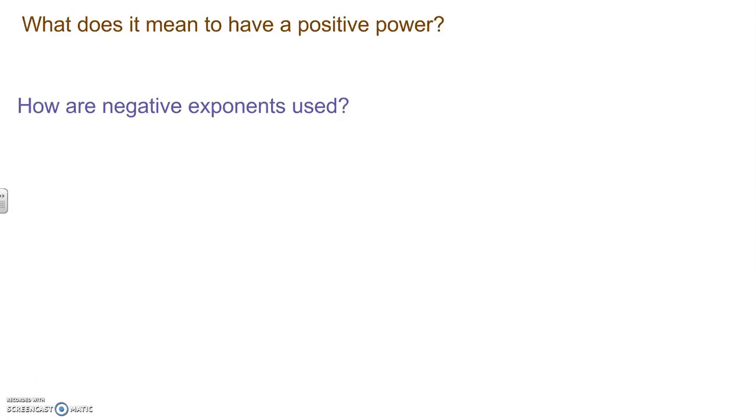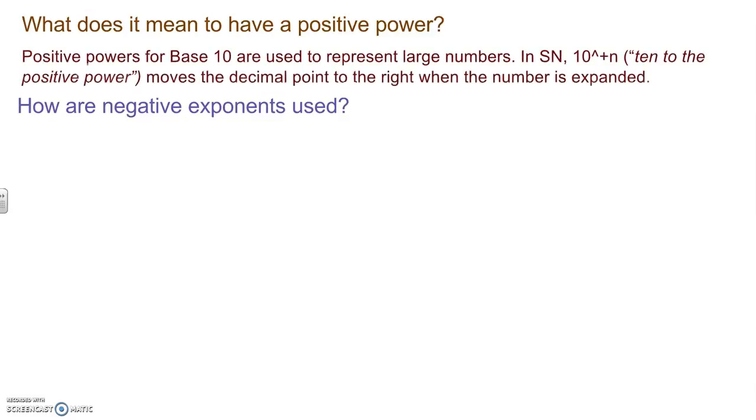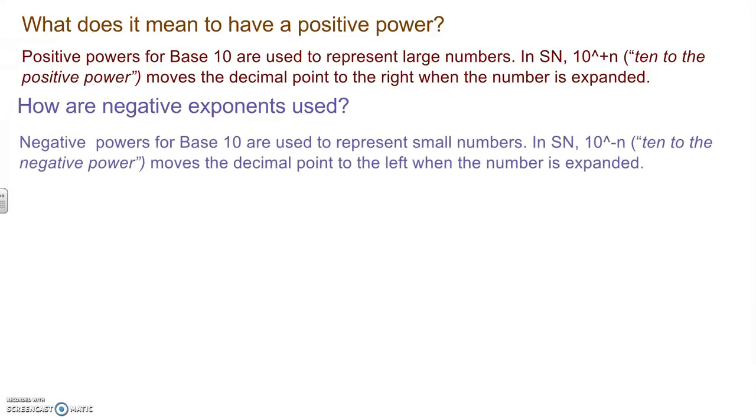What does it mean to have a positive power? How are negative exponents used? What positive powers for base 10 are used to represent large numbers? So what you're doing is when you go from scientific notation back to standard form, you're moving the decimal place to the right. When you're looking at negative powers with base 10, they're used to represent small numbers. In scientific notation, 10 to the negative n, well that ends up moving the decimal point to the left when the number is listed.